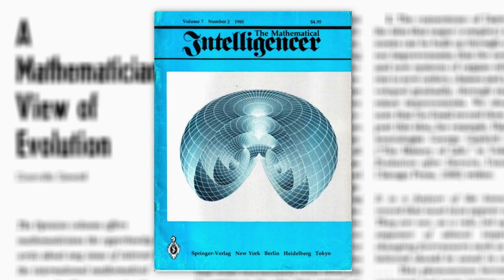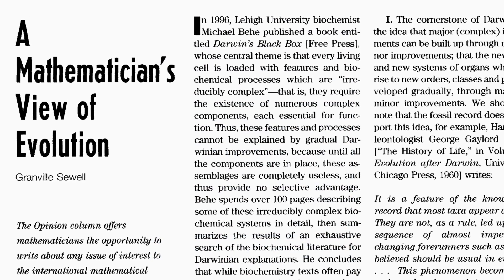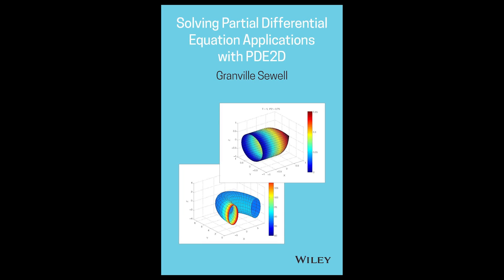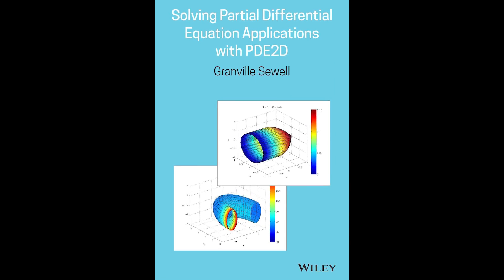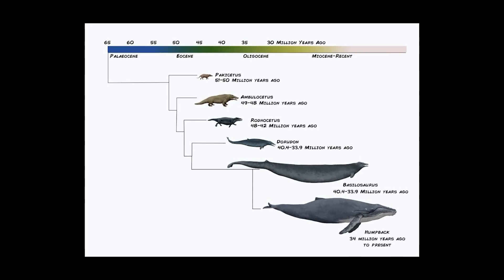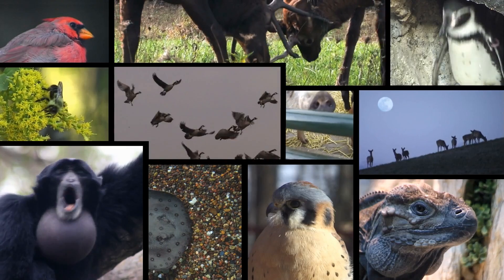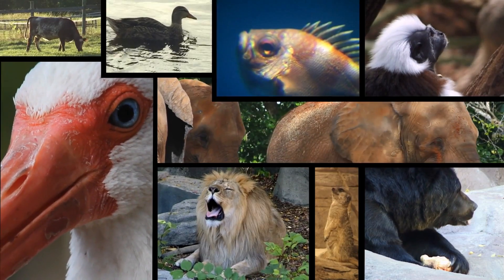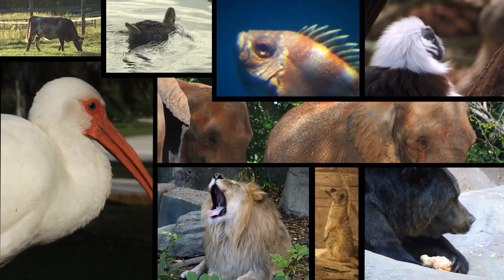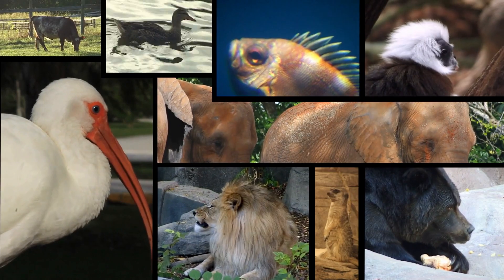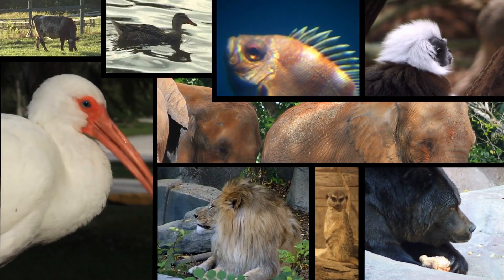In a 2000 Mathematical Intelligencer opinion piece, mathematician Granville Sewell compared the history of his partial differential equation solver to the history of life. He noted that there are large jumps in both, where major new features appear for the same reasons. Gradual development of new organs or new systems of organs that gave rise to new orders, classes, and phyla would require the development of new but not yet useful features. So Darwinism could not explain the development of these new features even if they did occur gradually.